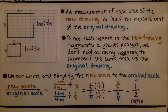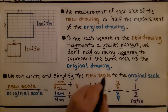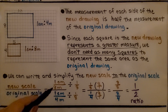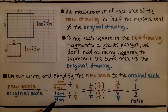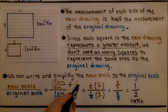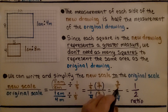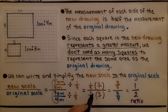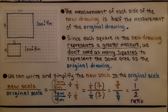We can write and simplify the new scale to the original scale. Since we're going new scale to original scale, we have new scale on top and original scale on the bottom: one centimeter to eight meters over one centimeter to four meters. We divide by one-eighth — remember, dividing fractions means multiplying by the reciprocal, so we flip to eight over one. We get eight over eight, which is one, for the numerator. For the denominator, one-fourth times eight over one gives us eight over four, which simplifies to two. So our ratio is one-half, or one to two.